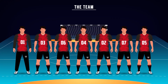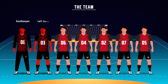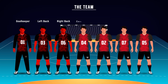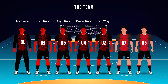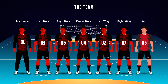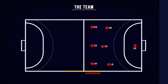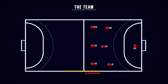The seven court positions are: goalkeeper, left back, right back, center back, left wing, right wing, and pivot. The remaining players are substitutes.